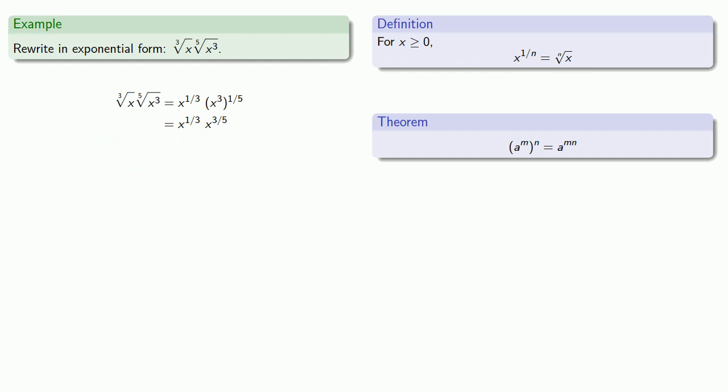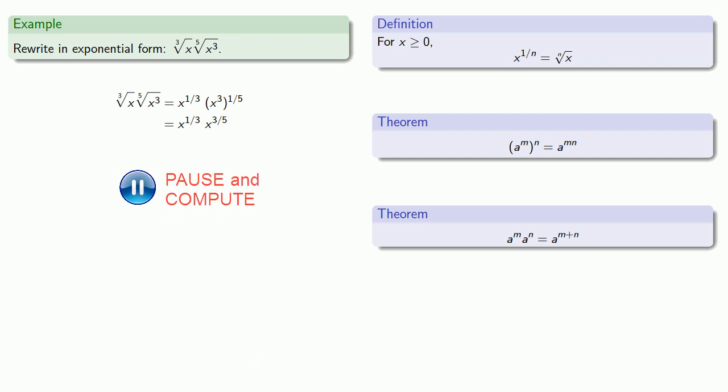But wait. There's still more. Here I have x to the one-third times x to the three-fifths, and our theorem says that we can add the exponential expressions together. So that's one-third plus three-fifths, and here is the hardest part of the problem. One-third plus three-fifths is eight-fifteenths.